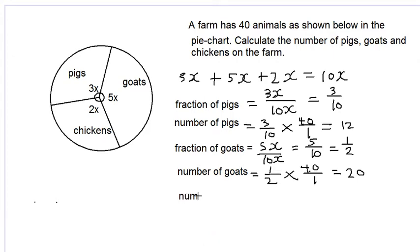Therefore the number of chickens would be equal to the total 40 subtract the sum of 12 and 20, which will be 40 subtract 32, which is equal to 8. So we have 8 chickens.